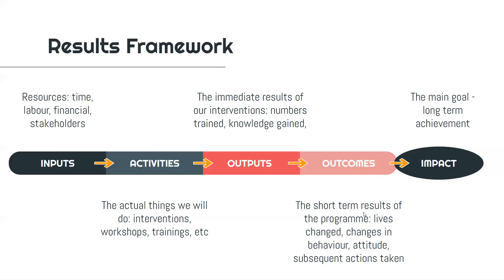A lot of people stop at outcomes when doing their reporting and measuring, but always think about how this leads to your impact and how you want to show that you've made the impact you set out to achieve. If you are clear on what you're trying to achieve and how you're going to make it happen, you can map out the causality of each of your outcomes. This will help ensure effective measurement of success at the right times, optimal resource allocation, and risk management.